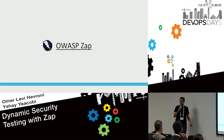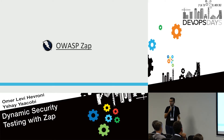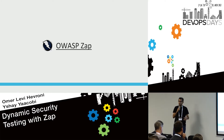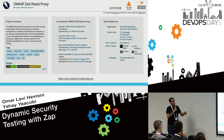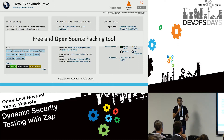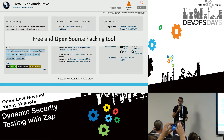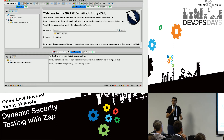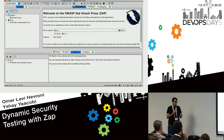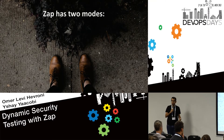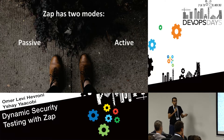The tool is called OWASP ZAP, or just ZAP. It's developed and maintained by OWASP — the Open Web Application Security Project — a non-profit organization that tries to improve the overall security of software development. ZAP is free, open source, highly active, highly maintained, and highly popular. When you open it you'll see a big attack button, which is what you'd expect from a hacking tool. ZAP has two modes: passive and active.